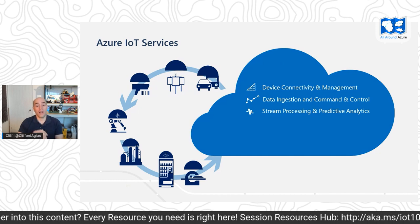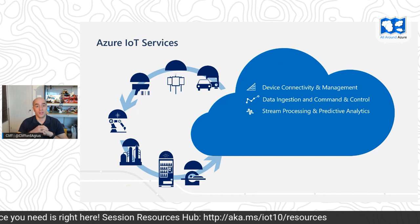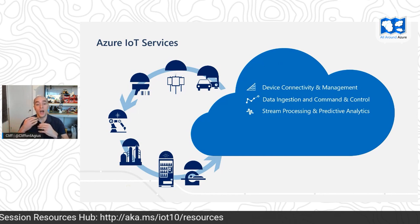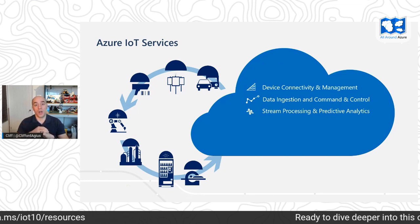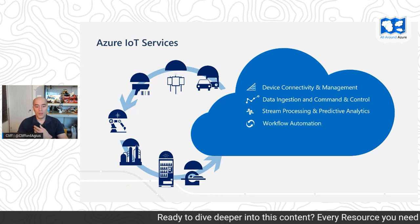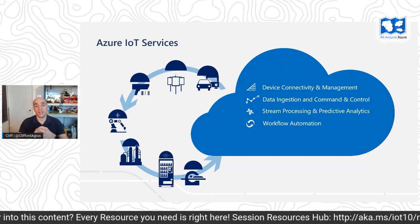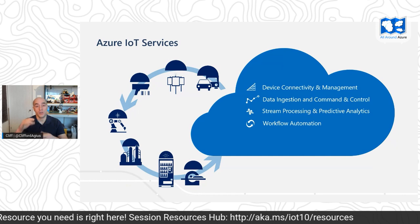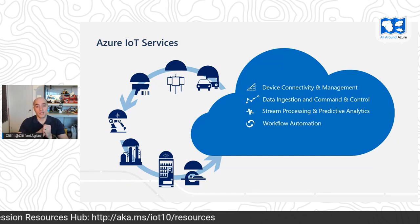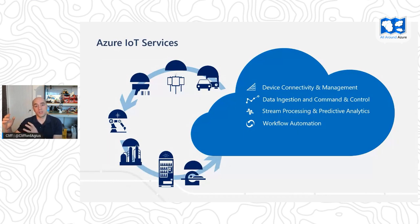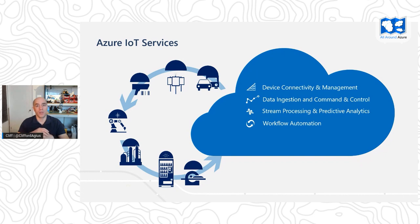Then we have stream processing — live, real-time processing of telemetry coming up from IoT devices — which means we can stream that in and view data in real time as it's happening from our millions of devices around the world. Then we have workflow management, where we take the insights of that data. Once we've got the data from our devices, streamed it in, processed it, and stored it in a database — be that Cosmos or SQL — then the workflow automation connects your back-end systems and business tools, your CRM system or SMS system that sends messages to drivers or technicians.